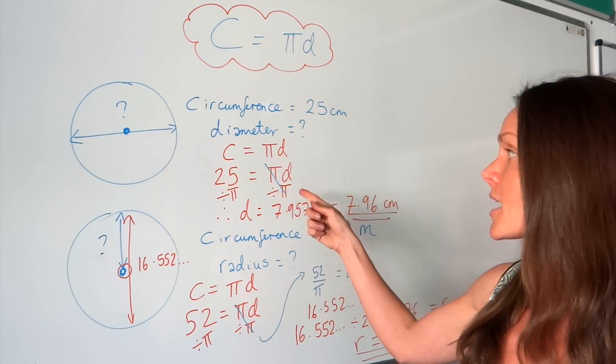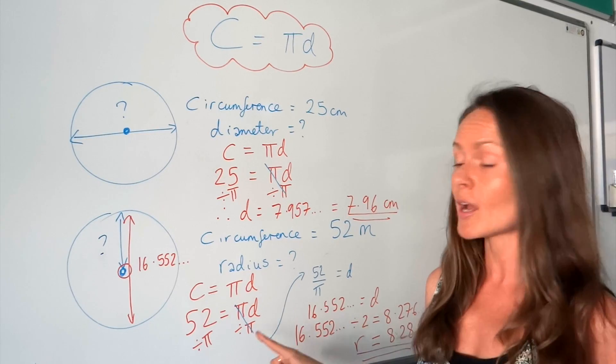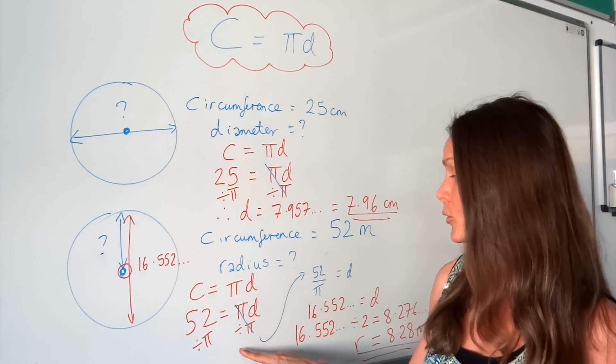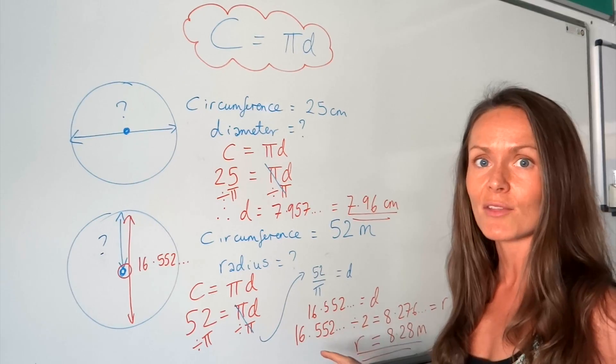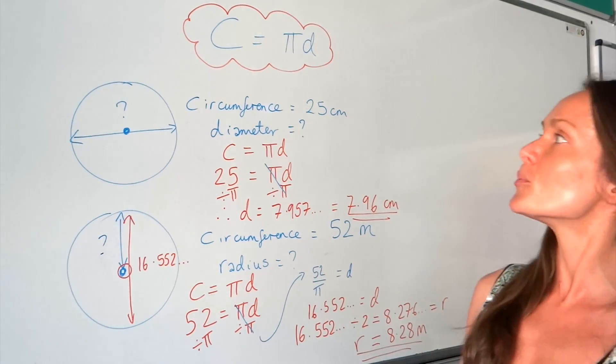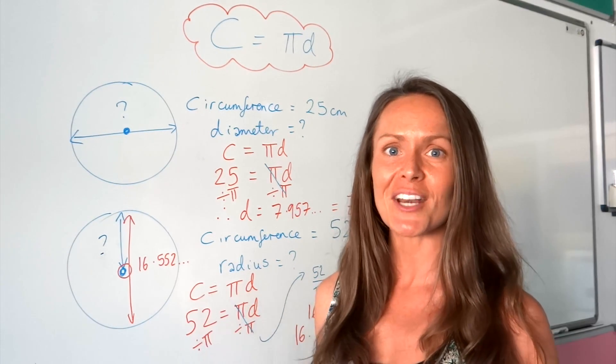So the first one was easy, finding that diameter. You just divide by π. But for the radius, not only do you have to divide by π, you then have to remember to half your answer at the end. So I hope now when you see questions to do with circumference, you'll know what to do. Bye-bye for now.